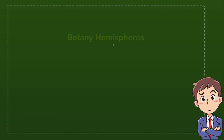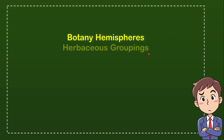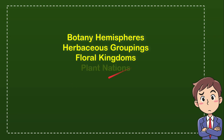Here is the list of options. The first option is botany hemispheres, the second option is herbaceous groupings, the third option is floral kingdoms, and the last option is planned nations.